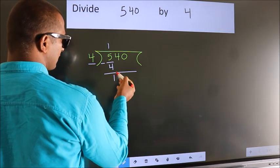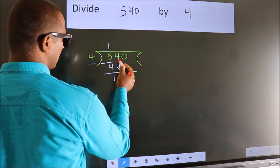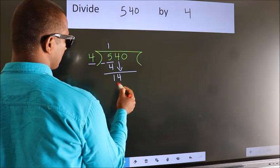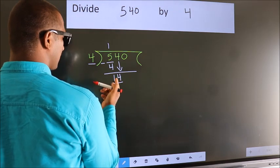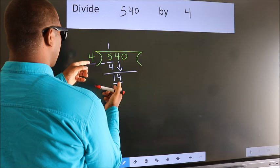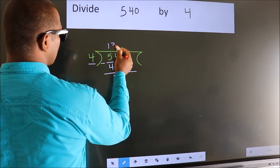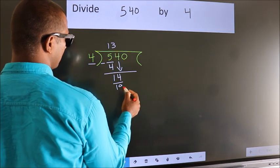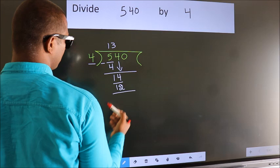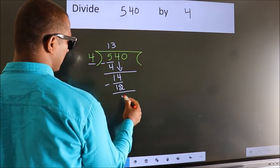After this, bring down the beside number. So, 4 down. So, 14. A number close to 14 in the 4 table is 4 times 3 is 12. Now we subtract. We get 2.